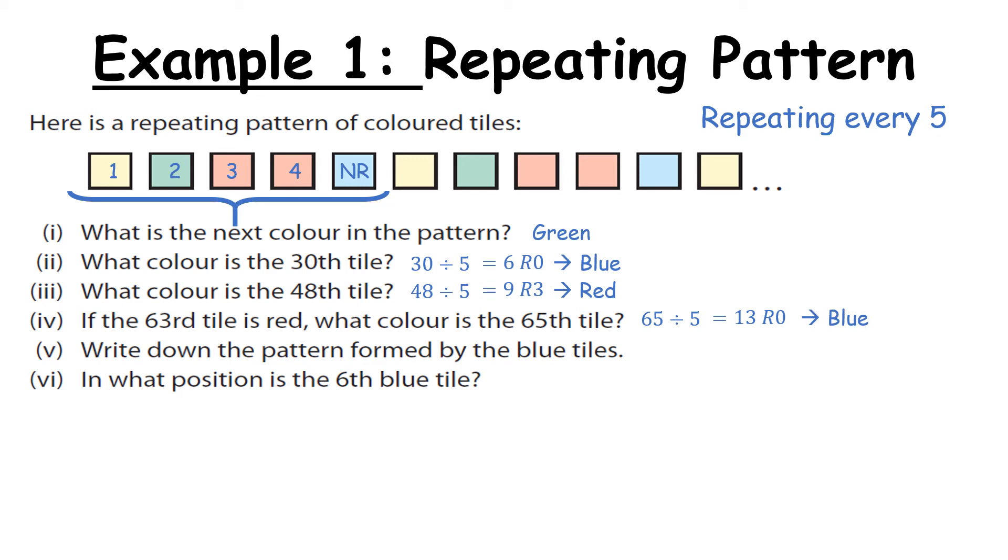Part five. Write down the pattern formed by the blue tiles. So the first blue tile is in space five, the next one is in space ten and so on. Because it repeats every five what we end up with is a linear sequence which has a common difference of five. So five, ten, fifteen, twenty and so on. It then asks in what position is the sixth blue tile? So if they ask for quite a large number we could use what we know about linear sequences. However because it's only sixth, we can continue on this pattern. So five, ten, fifteen, twenty, twenty five and the sixth blue tile would be in space thirty.